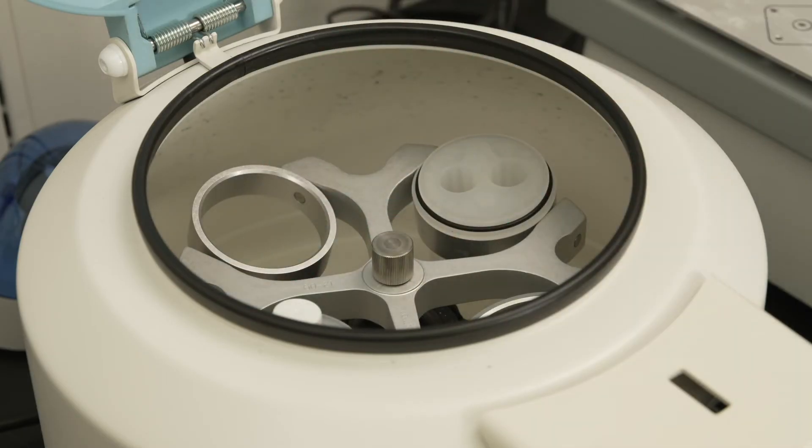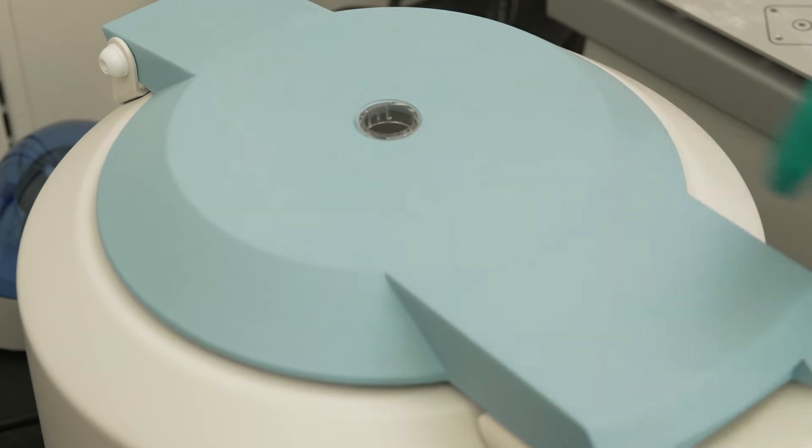The tubes are then centrifuged at 1,000 g's for 10 minutes or 800 g's for 15 minutes, with the centrifuge brake turned off.